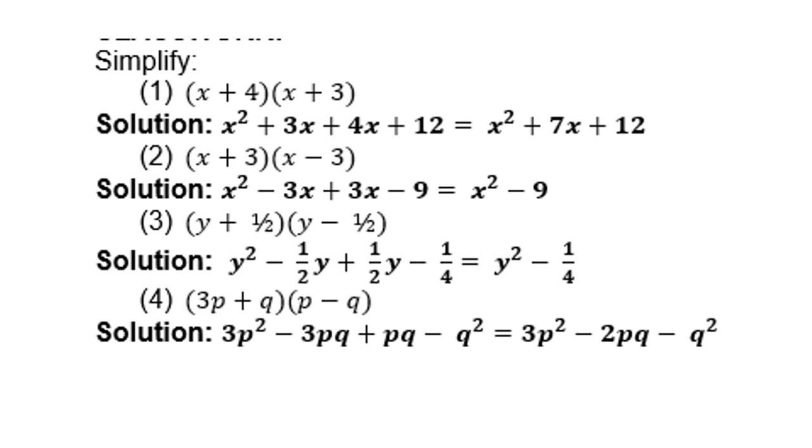The next one, x times x is x². X times negative 3 is negative 3x. 3 times x is positive 3x. 3 times negative 3 is negative 9. Then the two in the middle will cancel. You're left with x² - 9.